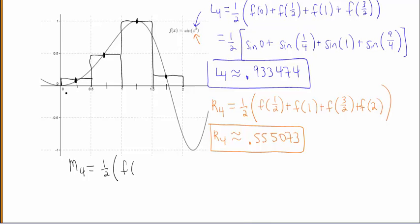So the midpoint between 0 and 1 half is 1 fourth. The midpoint between 1 half and 1 is 3 fourths. The midpoint between 1 and 1.5, that's 5 fourths. And hopefully by now you see the pattern then. These are odd fourths, so my next one's going to be 7 fourths. And that makes sense because 7 fourths is halfway between 3 halves and 2.